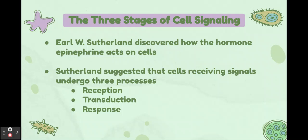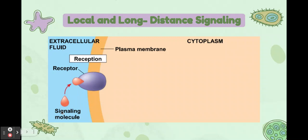Next, the three stages of cell signaling. Earl W. Sutherland discovered how the hormone epinephrine acts on cells, and suggested that cells receive signals in three processes: reception, transduction, and response. You should really know that cell signaling happens in these three processes.